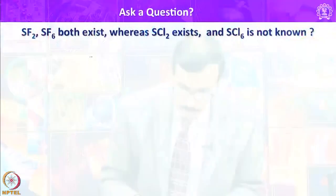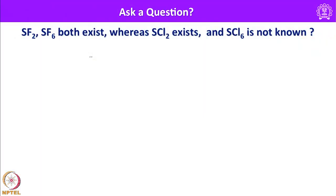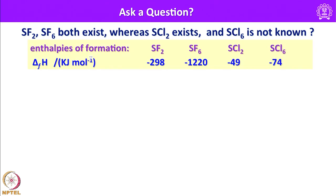This is how one can calculate the effective nuclear charge using simple, easy-to-follow Slater's rules. Now let us look into another interesting question: SF₂ and SF₆ (sulphur difluoride and sulphur hexafluoride) both exist, whereas SCl₂ exists but SCl₆ is not known. Let us look into the enthalpy of formation of these four molecules. For SF₂ it is −298 kJ/mol, for SCl₂ it is −49 kJ/mol, and for SCl₆ it is −74 kJ/mol. In both cases, compared to the dihalide, the hexahalide formation is more exothermic — but this does not give a satisfactory answer for the non-existence of SCl₆.